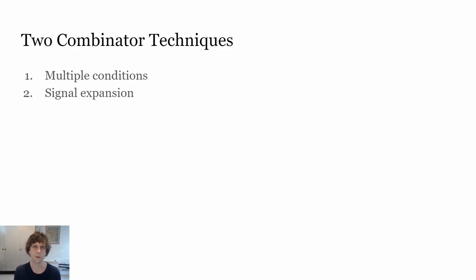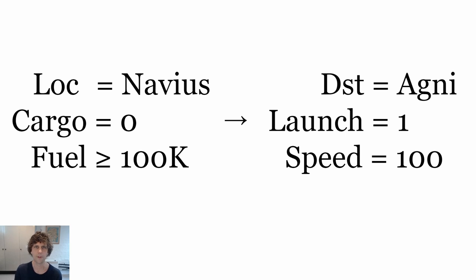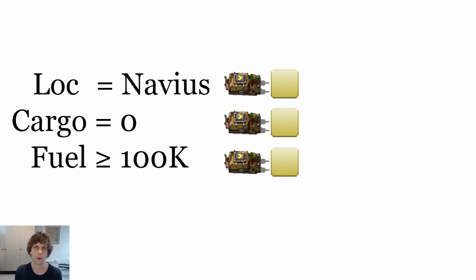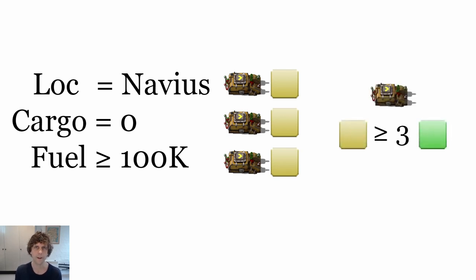To do this we're going to need to use two combinator techniques. The first is multiple conditions, and the second is signal expansion. Multiple conditions are how we make the left side of this equation work out. Each of these conditions is going to need its own decider combinator. If the condition is true, it needs to output one yellow signal. Then we use another decider combinator to output a green signal if all three yellow signals are present — any one yellow signal isn't going to be enough, we need all three, and that gives us a single green. You can use this for as many conditions as you like, which makes it quite expandable and also quite easy to debug.